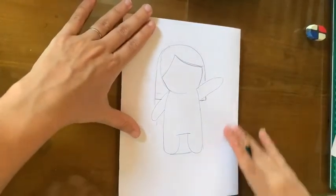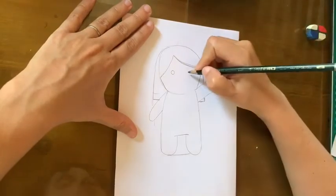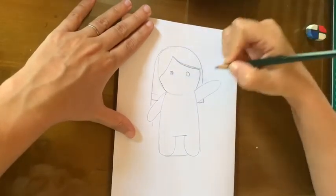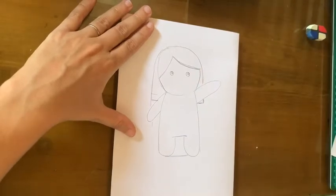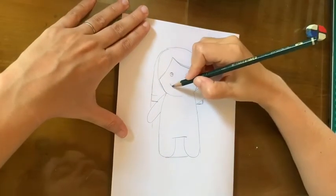For the eyes, you can just make a small circle. Two small circles. With a tiny one inside to be the glow of your eye. Right here. And I want to make a big smile.